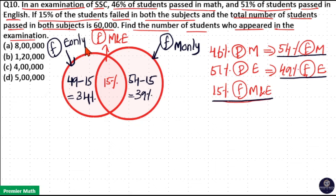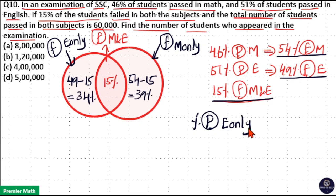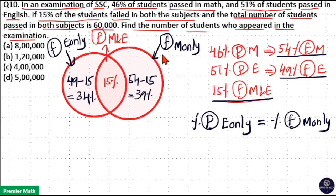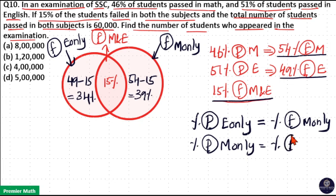Similarly, the percentage of students who failed in English only is equal to 49 minus 15, which gives us 34% — the percentage of students who failed in English only.